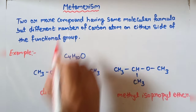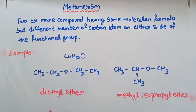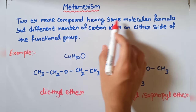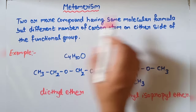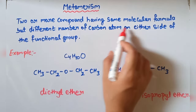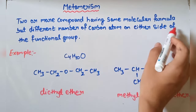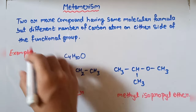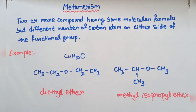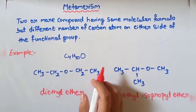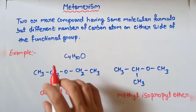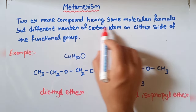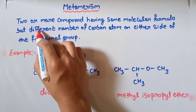Next type is metamerism. Definition: two or more compounds having the same molecular formula but a different number of carbon atoms on either side of the functional group.